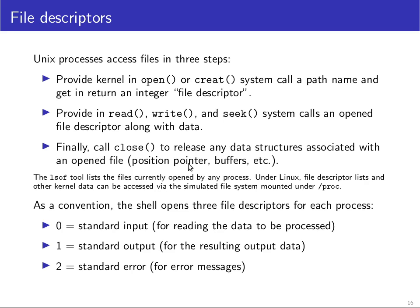By convention, the shell opens three file descriptors for each process. File descriptor 0, also known as standard input, is intended for reading data by a tool that hasn't been told to read from a particular file. File descriptor 1 is standard output, where by default many UNIX tools write their results. File descriptor 2 is standard error, also opened by default, meant for error messages, progress messages, or anything intended for the human user rather than what might be fed on to the next program.